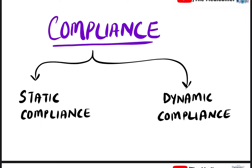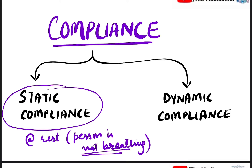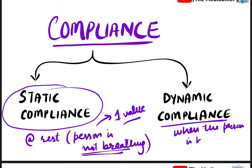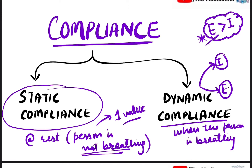Compliance can be of two types depending on how it's measured. Static compliance is measured at rest — when the person is not breathing. Dynamic compliance is measured when the person is breathing, either inspiring or expiring. Always remember that dynamic compliance during expiration will be more compared to inspiration.